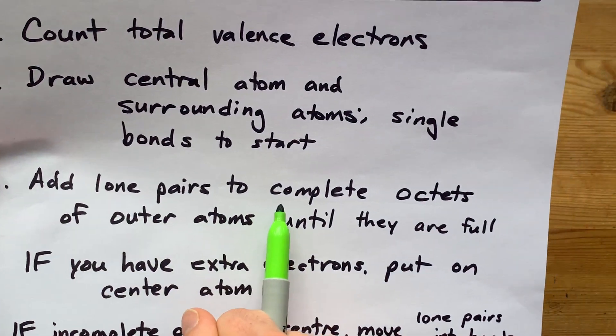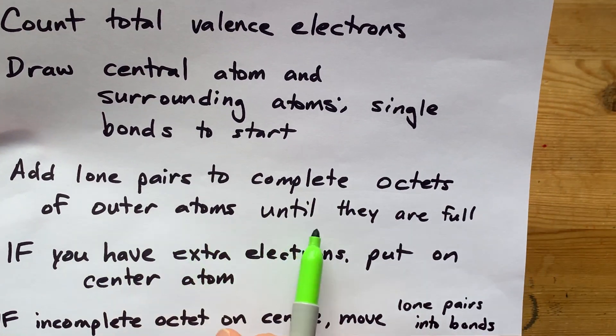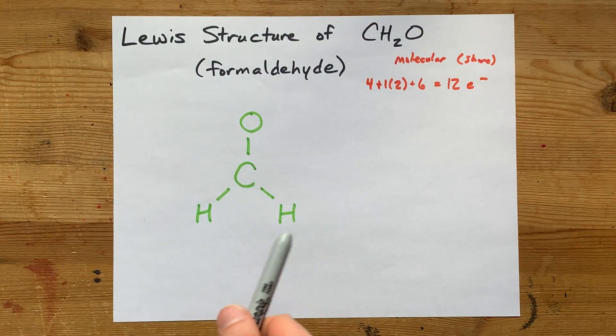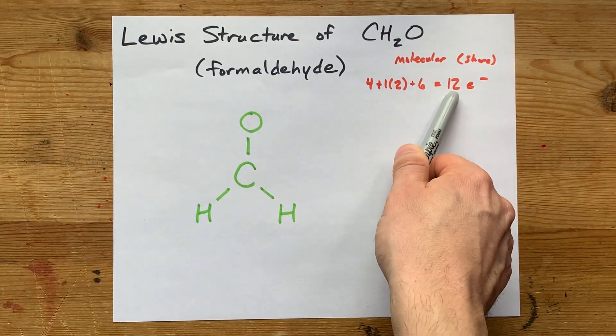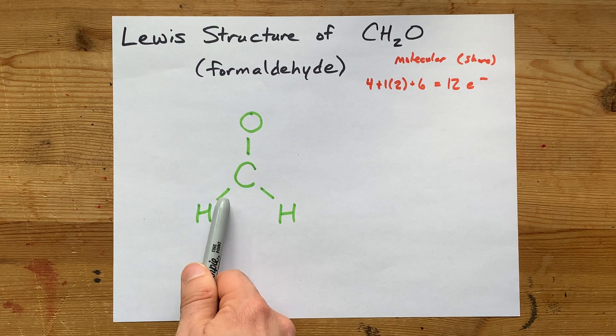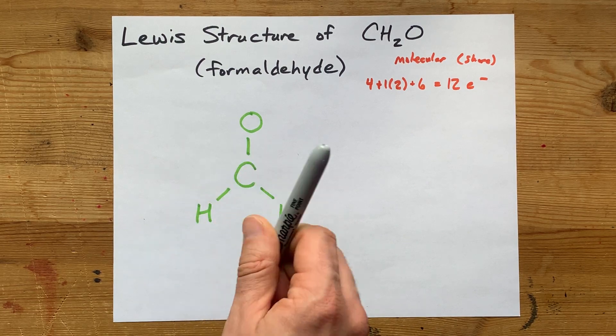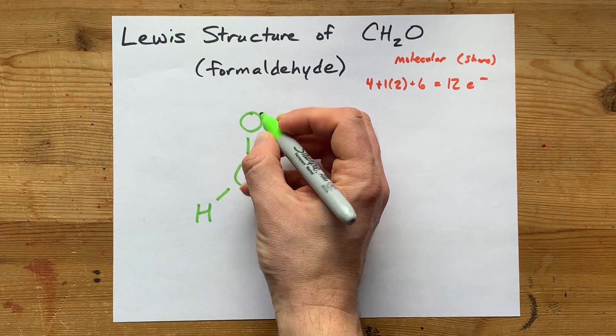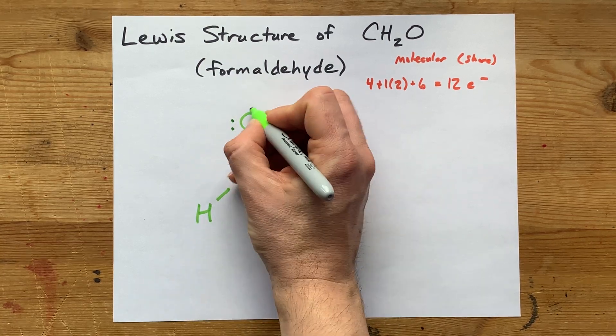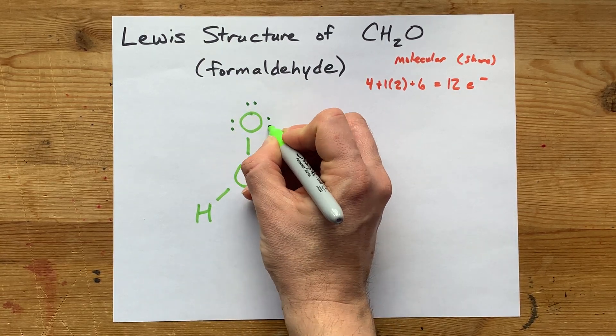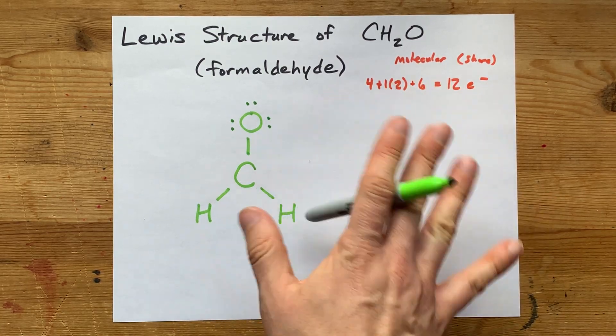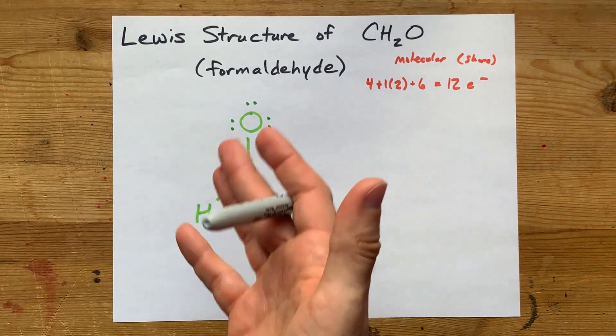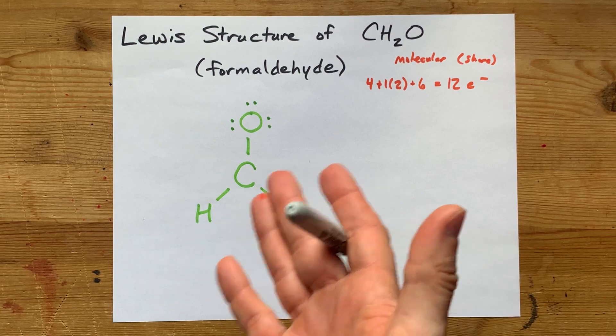We're going to add lone pairs to complete the octets of the outer atoms until they're full. Again, I'm not going to go past 12 electrons total, and I already have two, four, six electrons here. I need to complete the octet on here, so let's do seven, eight, nine, ten, eleven, twelve. That's my twelve electrons. I'm not going to be allowed to draw any more electrons on this than I already have.